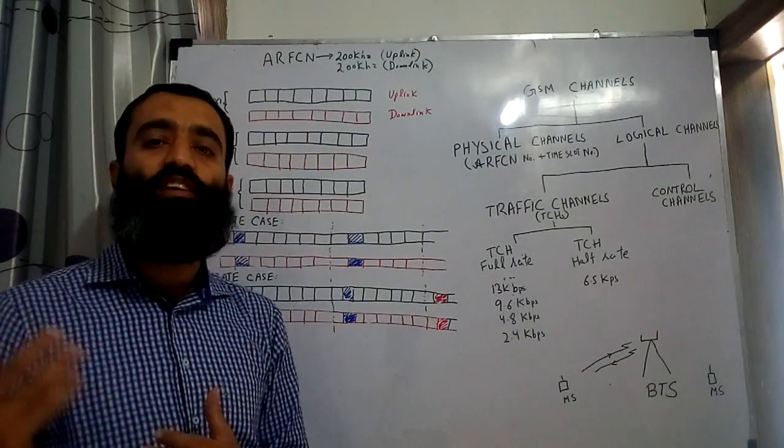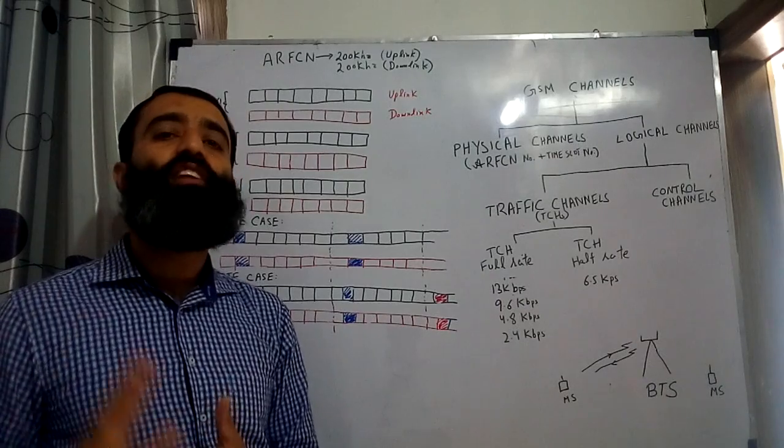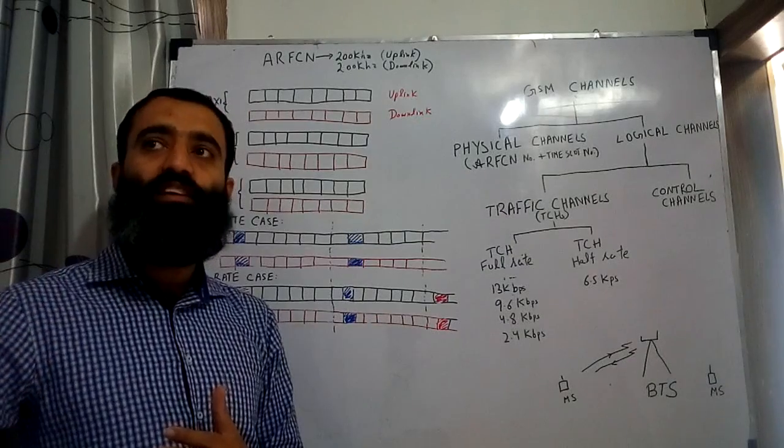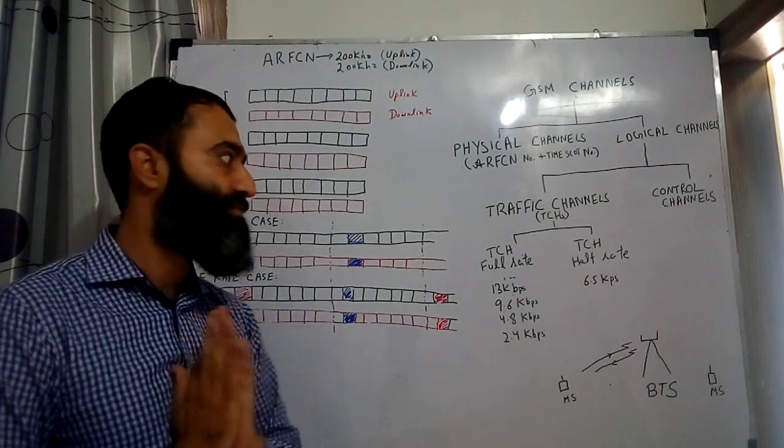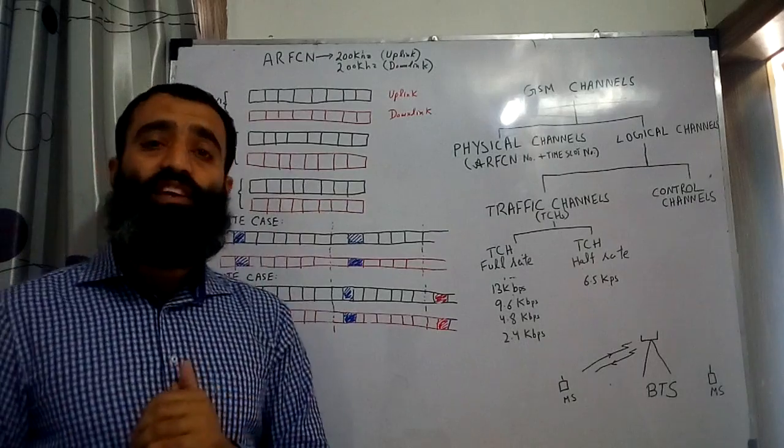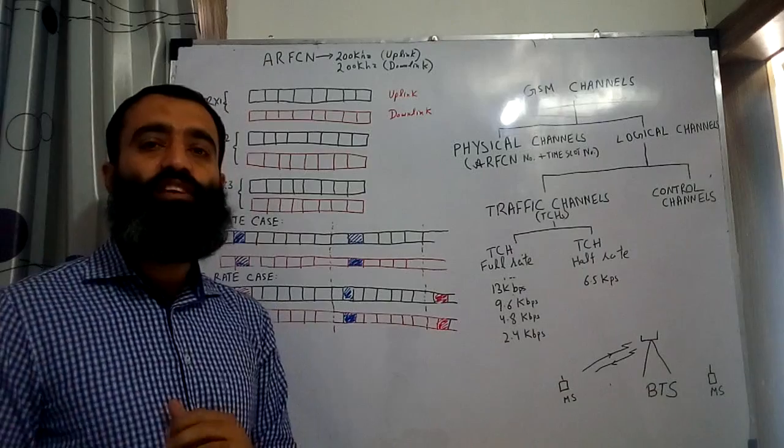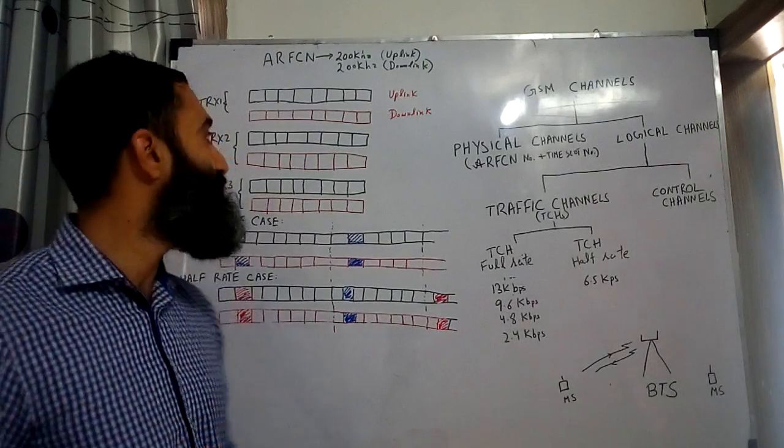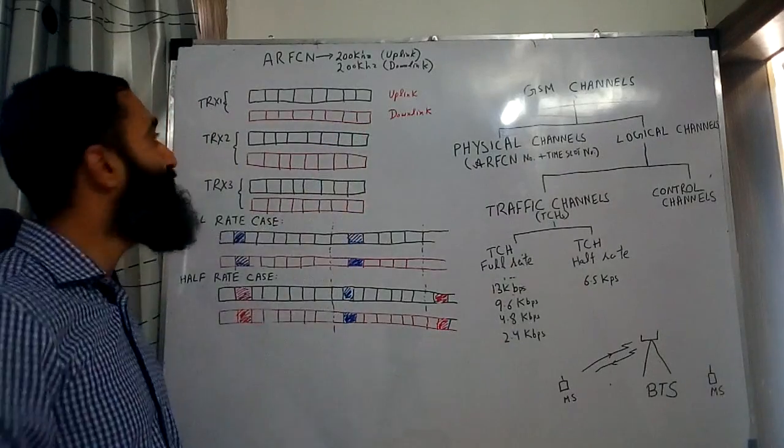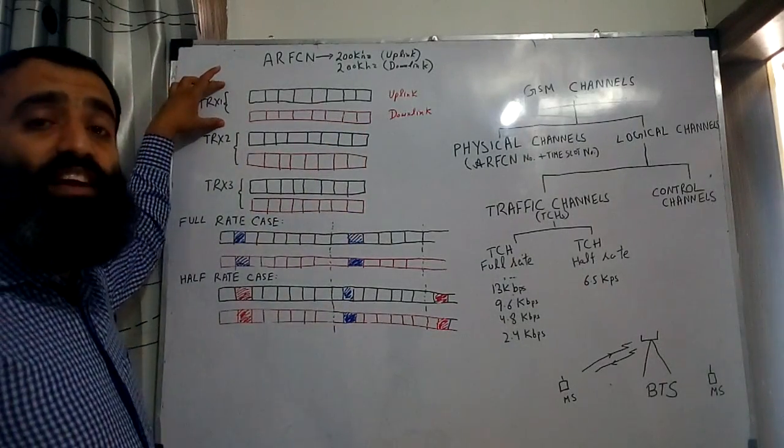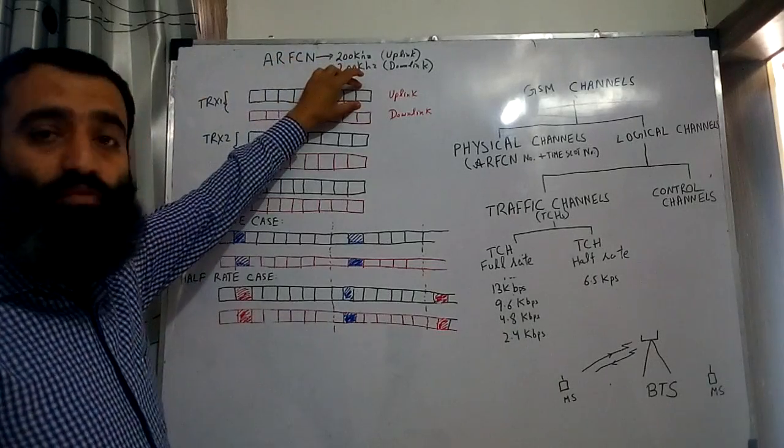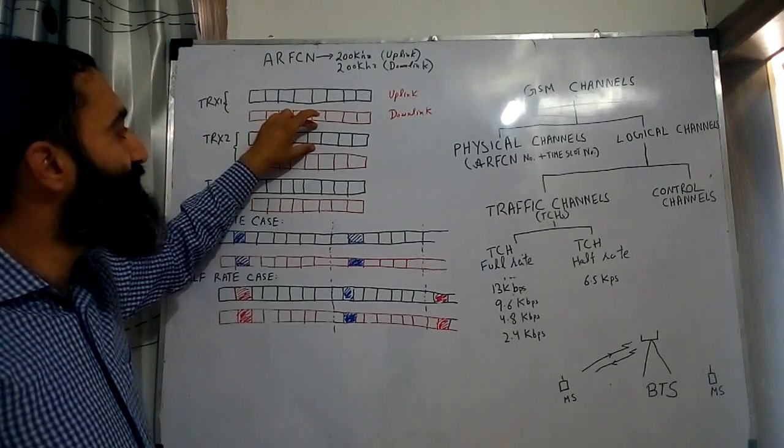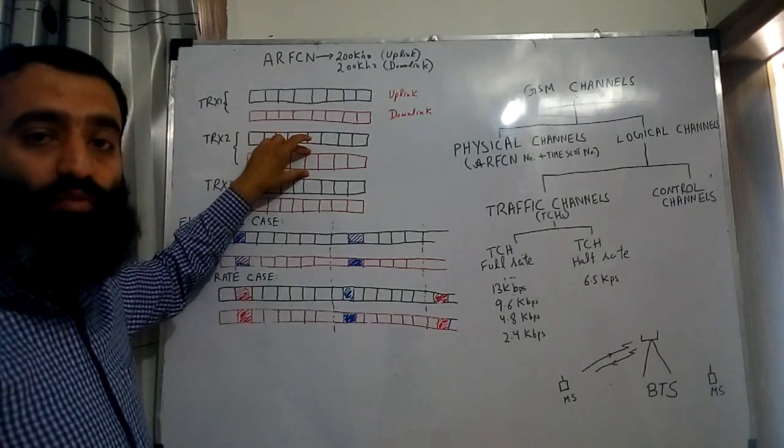This means that if three ARFCNs are given to a base station, it will have three TRXs. For example, you can see this case here—this is the TRX 1 with its uplink frequency and its downlink frequency, TRX number 2 with its uplink frequency and its downlink frequency.